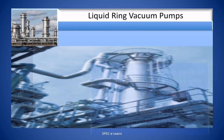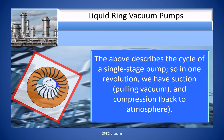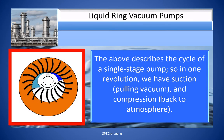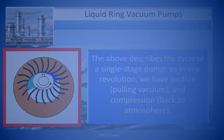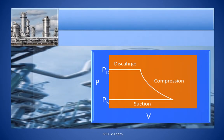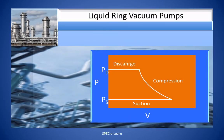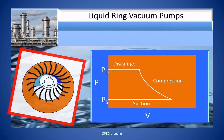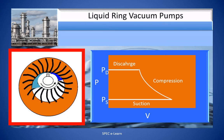The above sequence describes the cycle of a single-stage pump. So in one revolution, we have suction, pulling vacuum, and compression back to atmosphere. This figure illustrates the working of a liquid ring pump on a PV diagram.